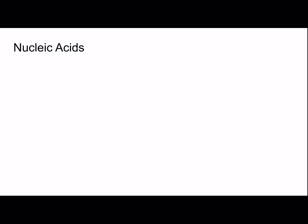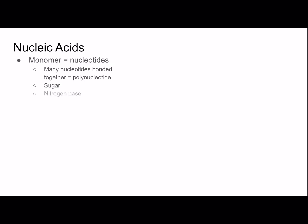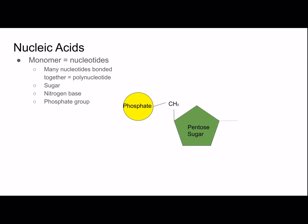The last group of macromolecules I'm going to talk about are nucleic acids — the monomer is a nucleotide. Many nucleotides bonded together form a polynucleotide. Each nucleotide is made up of a sugar, a nitrogen base, and a phosphate group. The sugar is a pentose sugar because it has five carbons. The carbons are labeled because that will affect the way nucleotides bond together to form a polynucleotide — the five prime end will bond to the phosphate group.